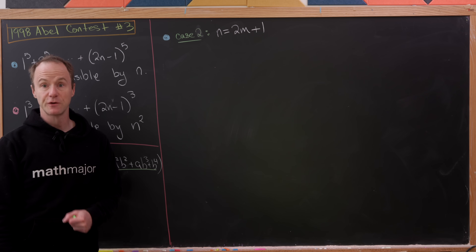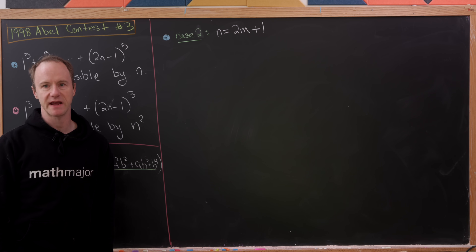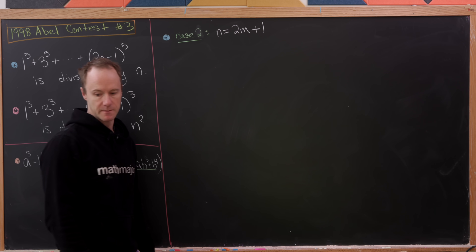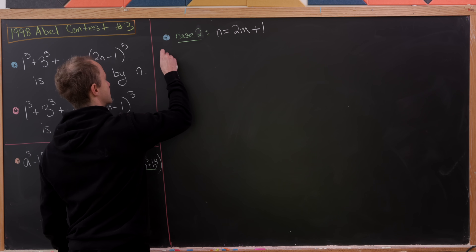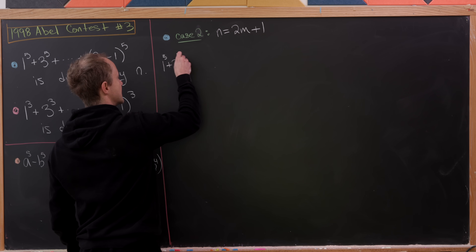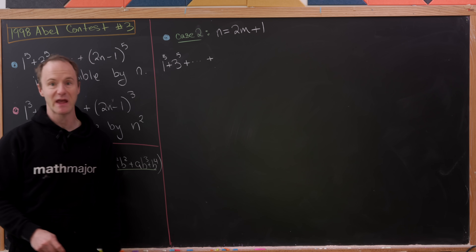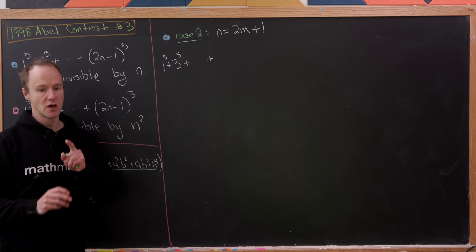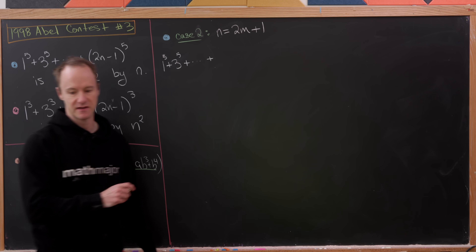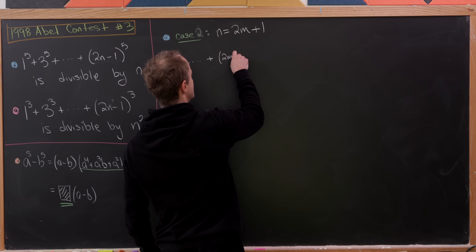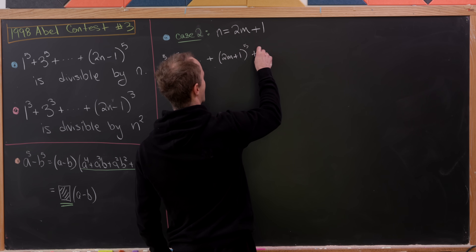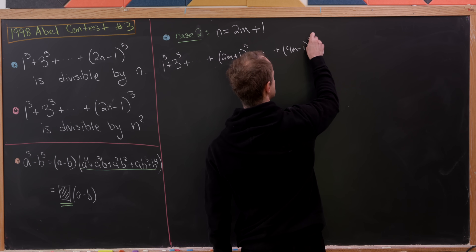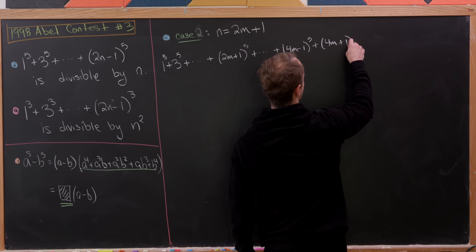The remaining case is when n is odd, so we can write n as 2m minus 1. In this case our sum has an odd number of terms, so when we fold we get a middle term that doesn't pair with anything. That middle term is 2m plus 1 to the fifth power. The edge terms look like 4m minus 1 to the fifth plus 4m plus 1 to the fifth.